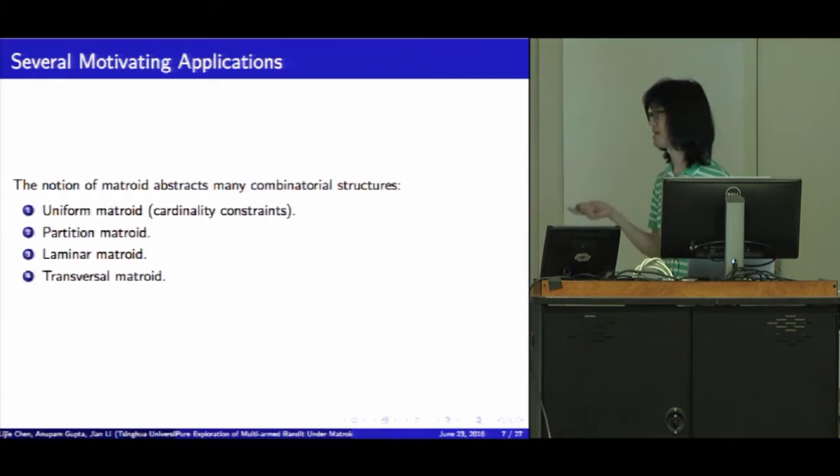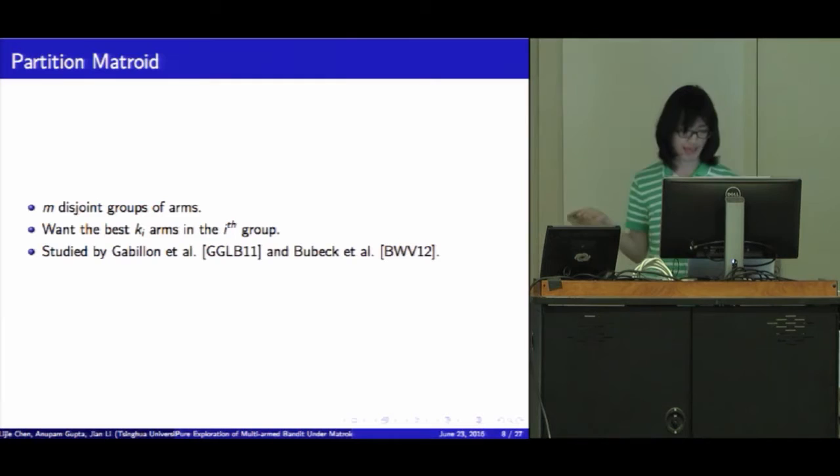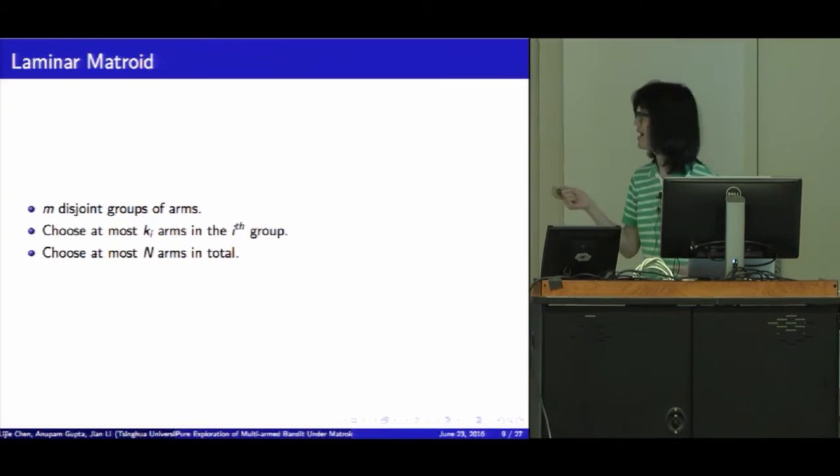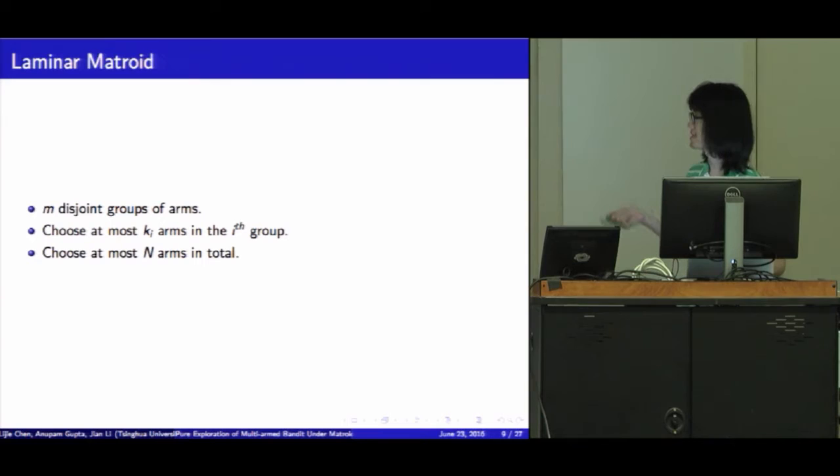Let's go through the matroids which are interesting to us. The first one is just uniform matroid. It's just the best k-arm and the best one-arm problem. And there comes partition matroid. There are m disjoint groups of arms, and you want the best k_i arms in the i-th group. It's studied by Gabillon et al. and Bubeck et al. Also, we can have an additional constraint that you can choose at most n arms in total, besides the previous group constraints. Then it will become a special case of the laminar matroid.